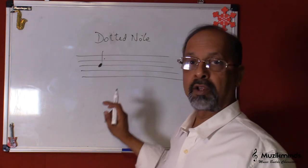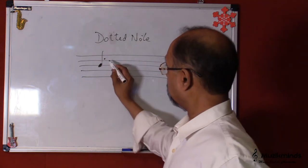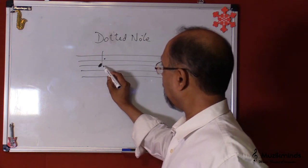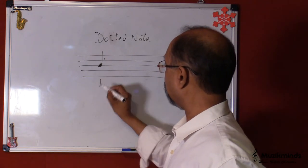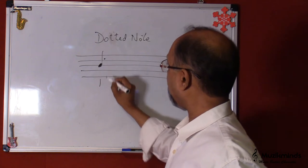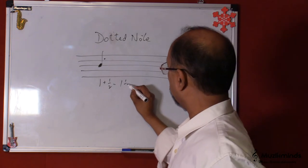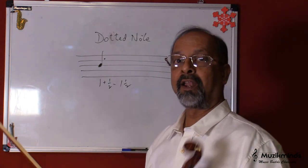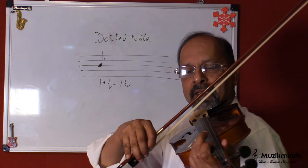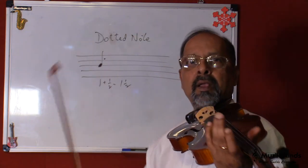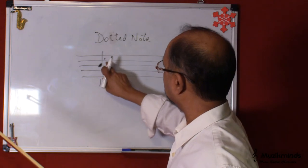Now this is a dotted note. There is a dot here that you can see after this crotchet. So what does this mean? We add half the value of this note to this note. That's how we play it. Now this note is a crotchet, which is one beat. So we need to add another half to this one. So we have one plus half, which would be equal to one and a half. The length of this note would be one and a half. That means if this is one, we need to prolong it for a little more time to make it one and a half. So that's one and a half. So what we need to do is just add a half to this note.